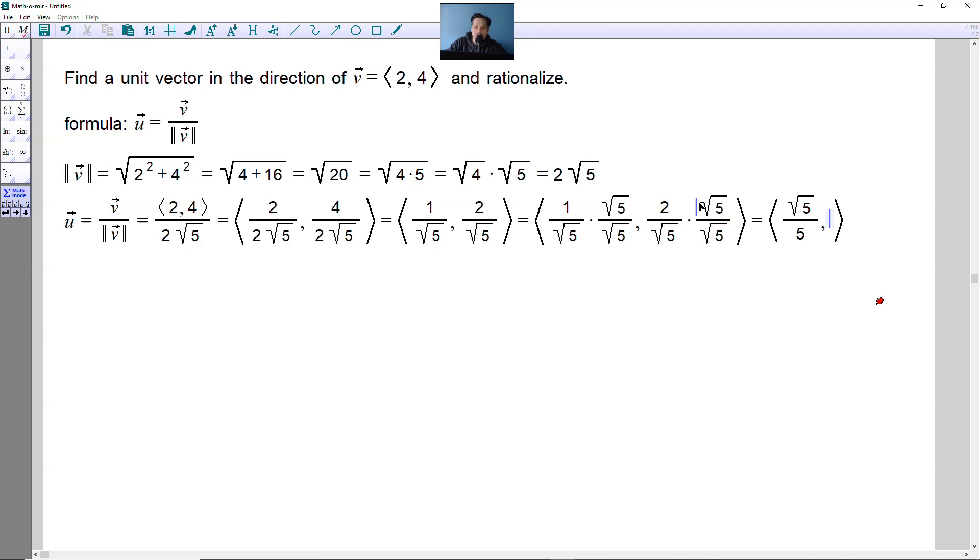you're going to have 2 times the root of 5 over the root of 5 times the root of 5, which is just 5. So it's going to look like this: 2 square root of 5 over 5. And then it looks like this.